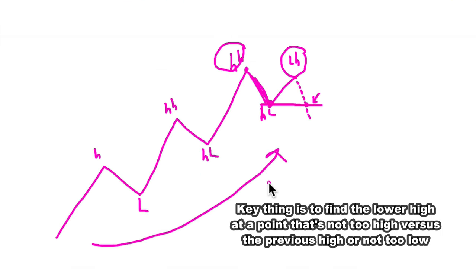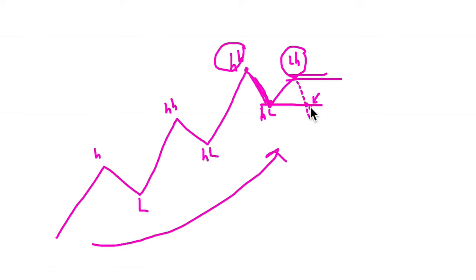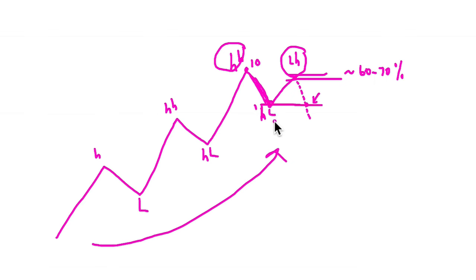One of the key things in spotting this lower high is to find it at a point that's not too high versus the previous high and not too low. If you see the high as 10 and the low point as 1, you want to find this lower high around the 60 to 70 percent of the previous downward range. That means you'd be looking at a number of around 6 to 7 if you see the high as 10 and the low as 1.